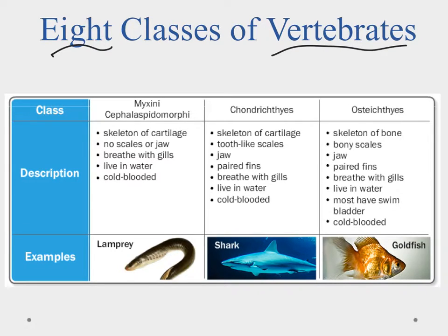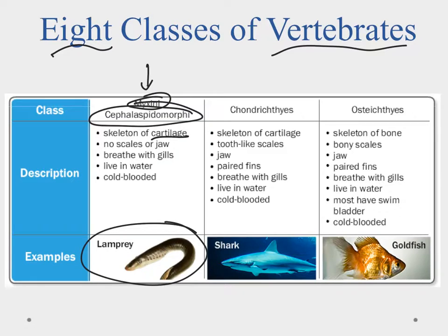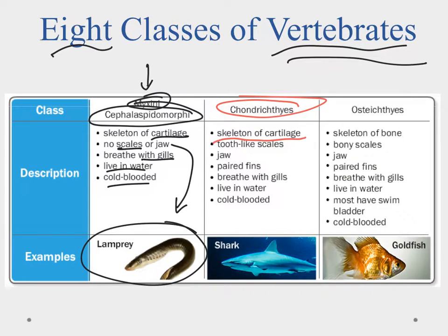Within the vertebrate phyla we have eight different classes. The first is actually a combination of two classes — the Myxini and the Petromyzontomorphi — which are our lampreys and hagfish. These have a cartilaginous skeleton, no scales, are jawless fishes, breathe with gills, live in water, and tend to be cold-blooded. These are kind of ancestral, a throwback to what our first vertebrates probably looked like. Next are the Chondrichthyes — sharks, skates, and rays — which also have a cartilaginous skeleton but have scales made of denticles, essentially tooth-like material. They have jaws, paired fins, breathe with gills, live in water, and are cold-blooded, though some regulate body temperature slightly.